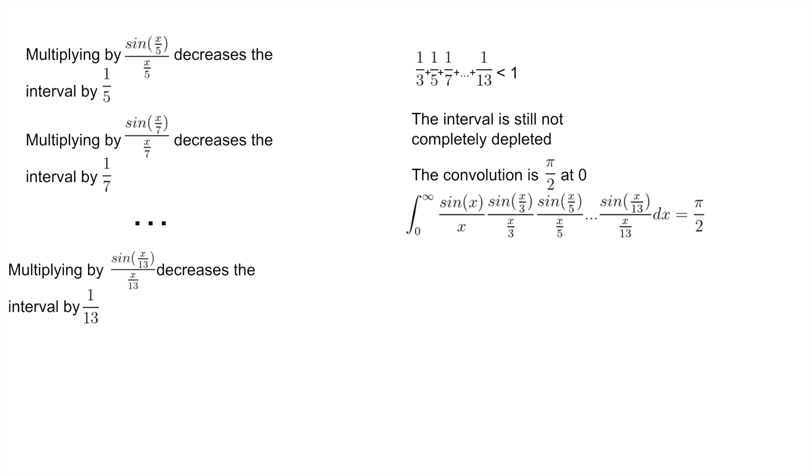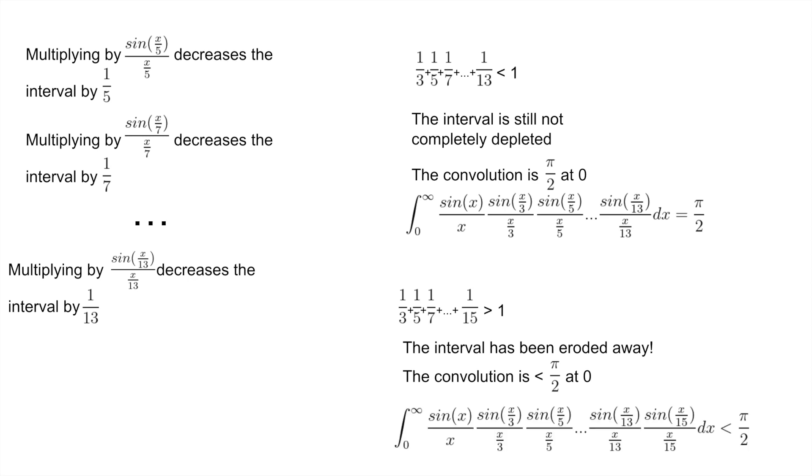But if we add that final term sin(x/15)/(x/15), everything changes. 1/3 plus 1/5 all the way up to 1/15 is actually a little bit more than 1. So our interval has been completely eroded away. Therefore, it is no longer equal to exactly π/2 at 0. And in fact, it's equal to a very small amount less than π/2. And so therefore, the integral from 0 to infinity of sin(x)/x times sin(x/3)/3, all the way up to sin(x/15)/(x/15), is not actually quite π/2.